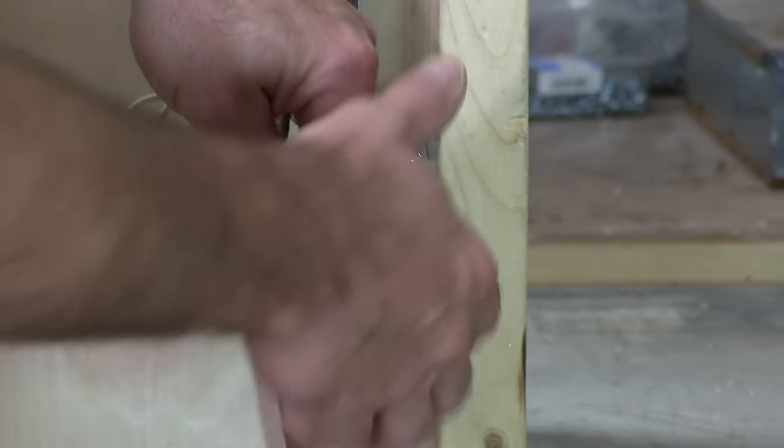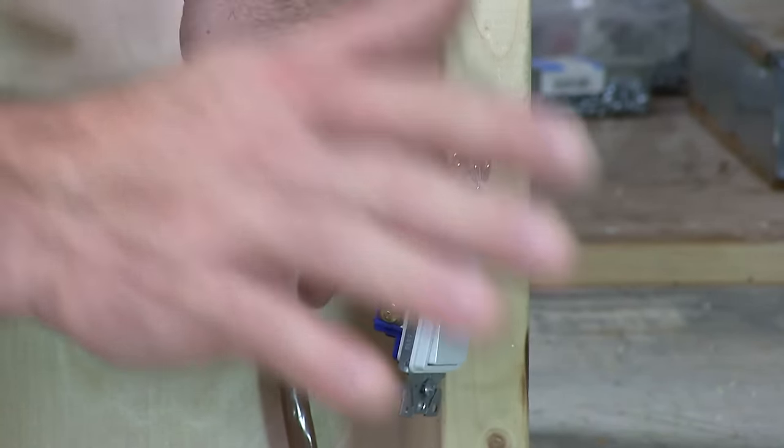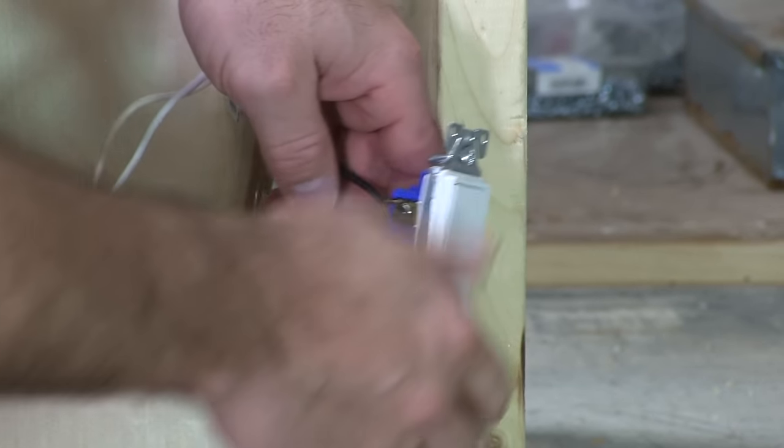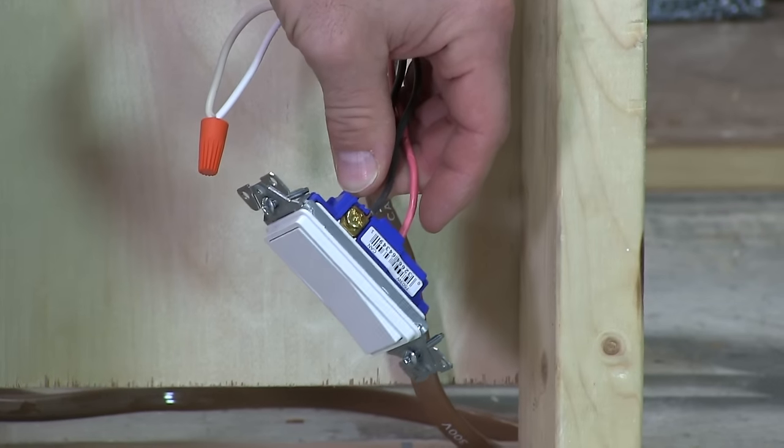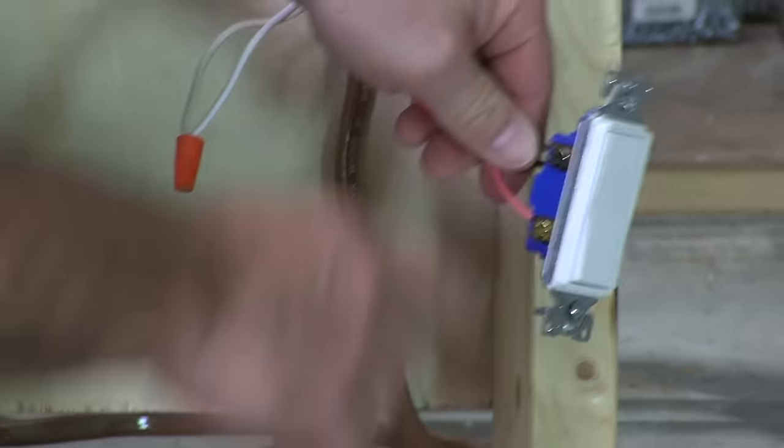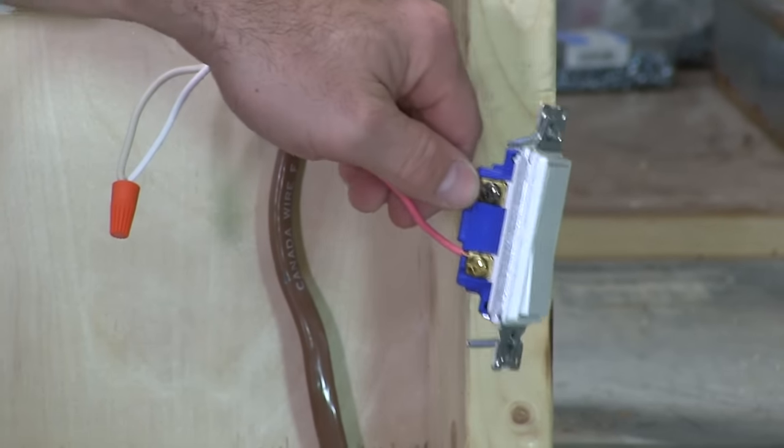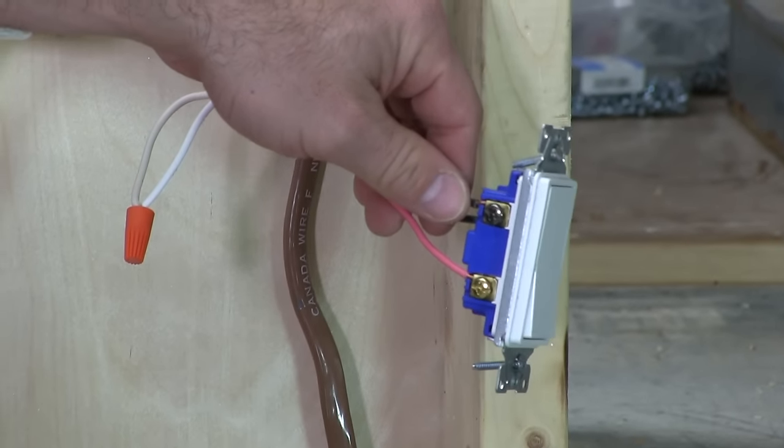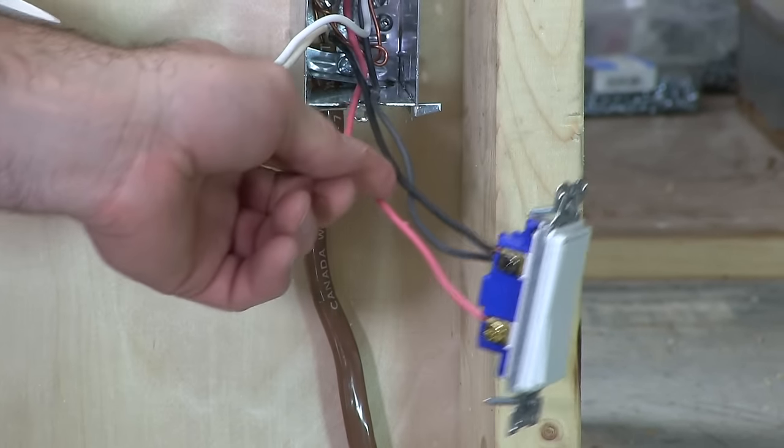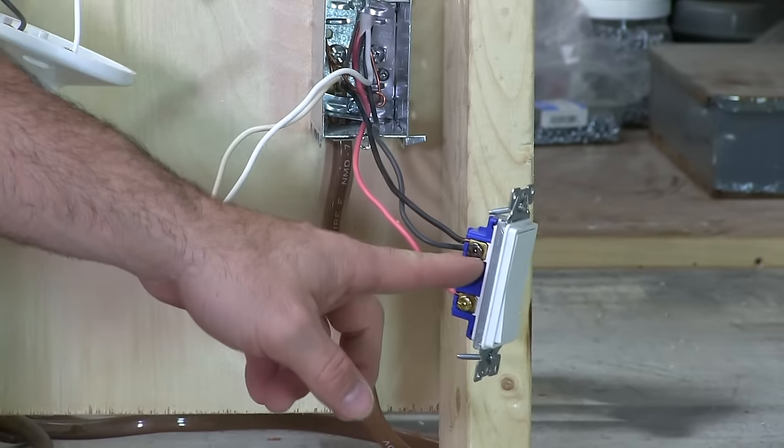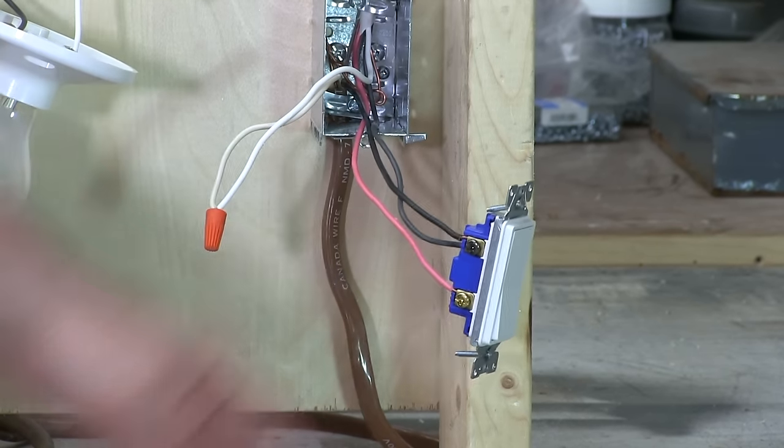A three-way switch will have three screws on it, not talking about the ground screw at all. Two of them are going to be brass, and one almost always is going to be black to identify that that's our common screw, our common connection. So the supply hot is going to the common screw on the first switch.